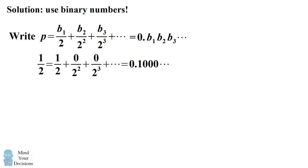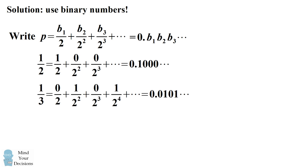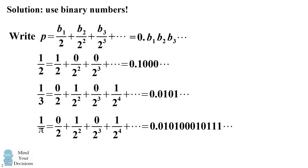I'll give some examples of binary numbers. The fraction 1 half can be written as 1 half plus 0 over 2 to the power of 2 plus 0 over 2 to the power of 3 and so on. So in binary form this will be 0.1 and then there will be 0s after that. The number 1 third will be written as 0.0101 repeating — 0101 and so on. 1 over pi also will have a binary expansion. This will go on forever, but there is a binary expansion to this number.